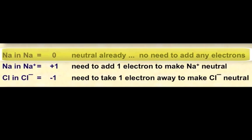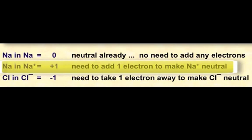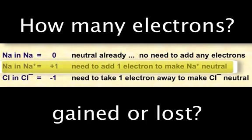So if you have sodium, a sodium atom, it hasn't lost or gained any electrons. It has its full set of 11 electrons, it's neutral already, so its oxidation state is zero. If it's lost an electron to become a positive ion, a plus one ion, then to make it back to a neutral atom we would have to add one electron.